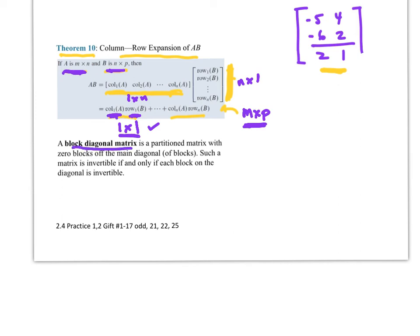Okay, so then a block diagonal matrix. This is a separate theorem that we can deal with, is a partition matrix with zero blocks off the main diagonal, and such a matrix is invertible if and only if each block on the diagonal is invertible. So that means that if we have something like this, this has to be invertible, this has to be invertible, and then these are zeros. Now I didn't write out all the particulars about that. I'm talking about the blocks. But if this is the case, both of these are invertible, then the whole thing will be invertible.